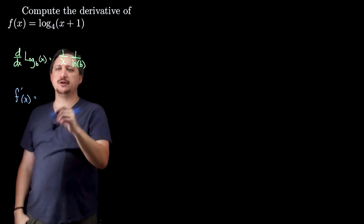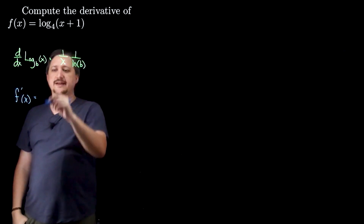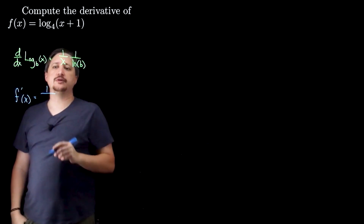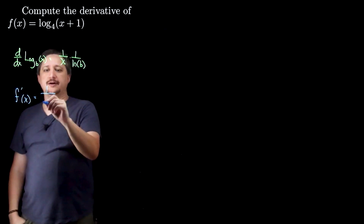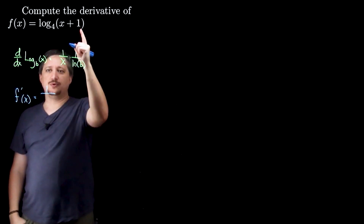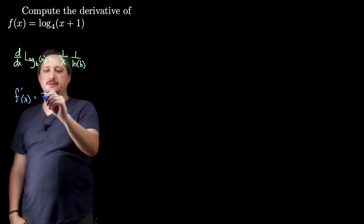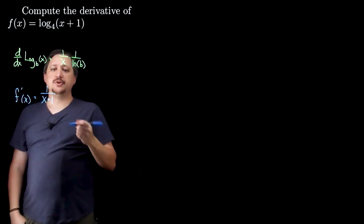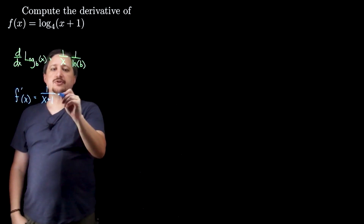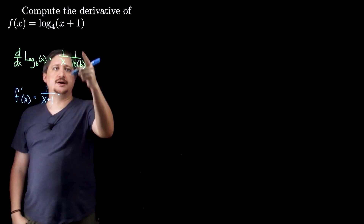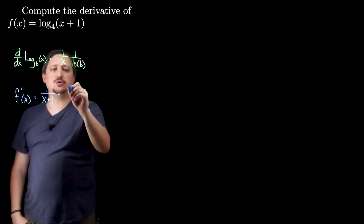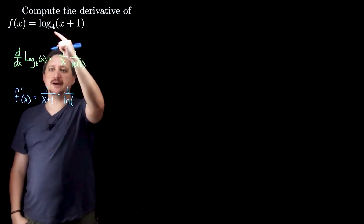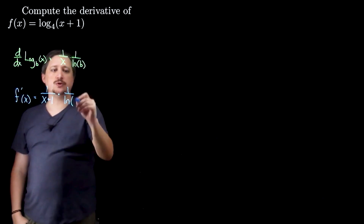So I end up with 1 over that thing — 1 over the whole inside, x plus 1. But then I'm going to multiply by 1 over the natural log of the base, which in my case is just 4.